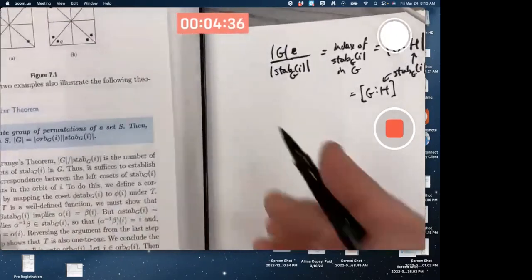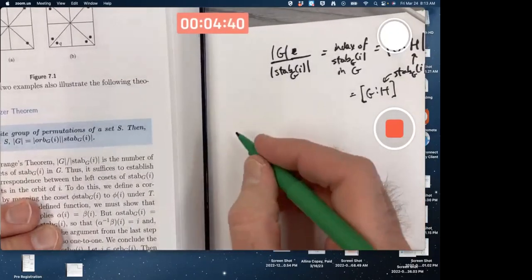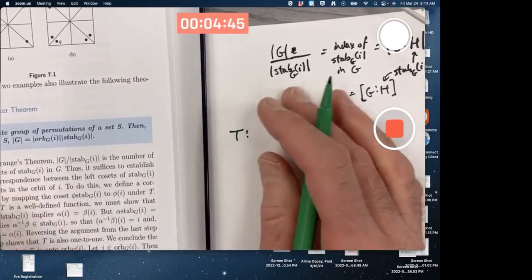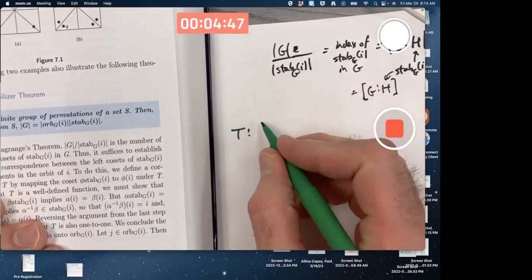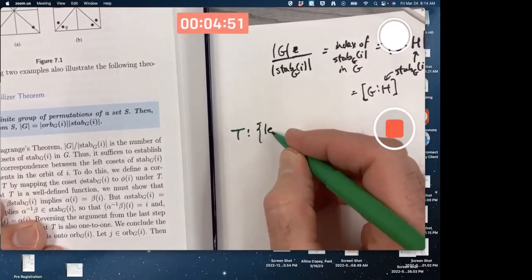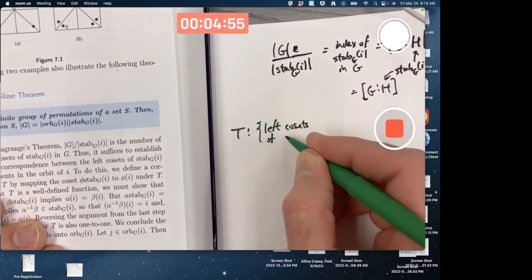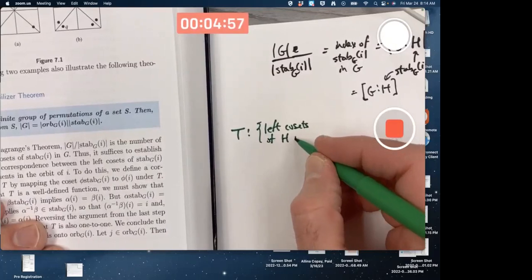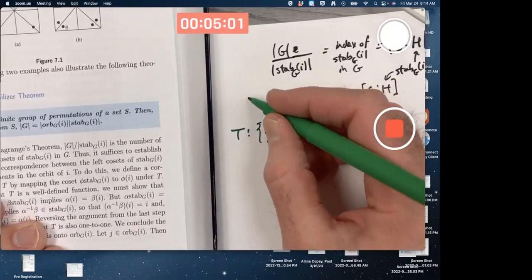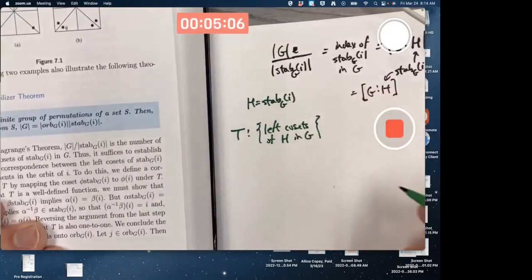So maybe to try to understand this better, you want to use this kind of notation. T is going to be a function from the left cosets, the collection of left cosets. I'm going to go ahead and just use H for short, of H in G, where H, again, is the stabilizer, just for the sake of convenient notation and not having to write the stabilizer every time.